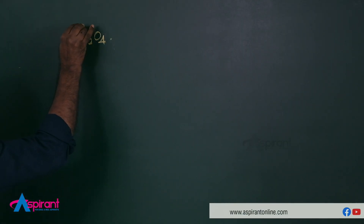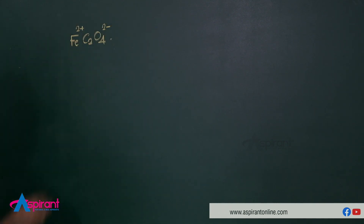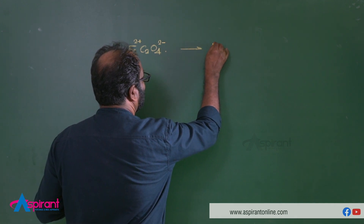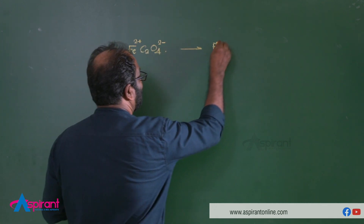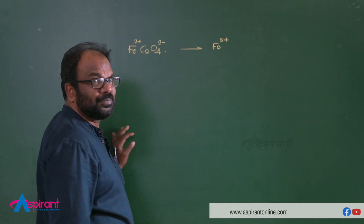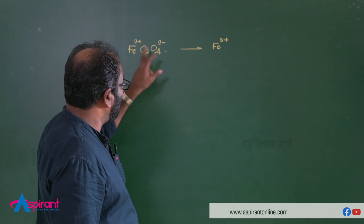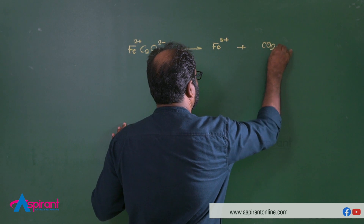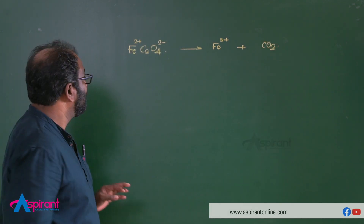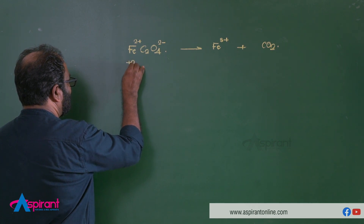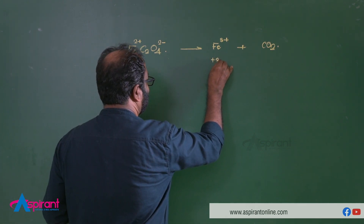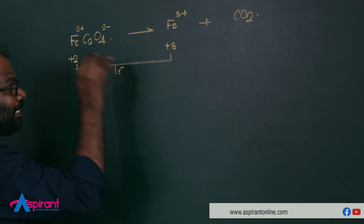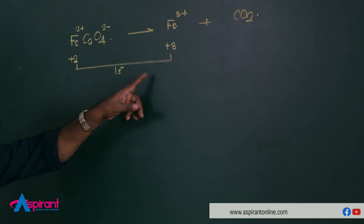Ferrous oxalate consists of Fe²⁺ and C₂O₄²⁻. The oxalate ion C₂O₄²⁻ is present in ferrous oxalate. So for 2 moles of ferrous oxalate, we need to consider both the iron and oxalate components.